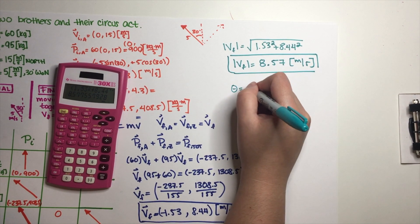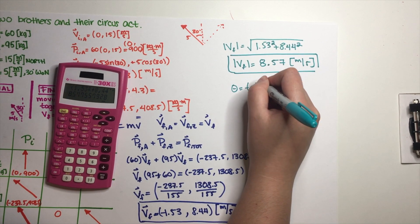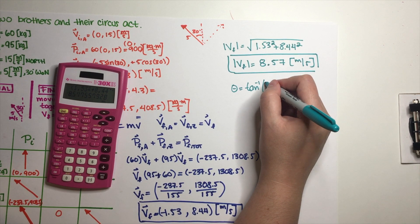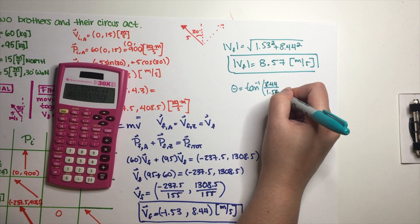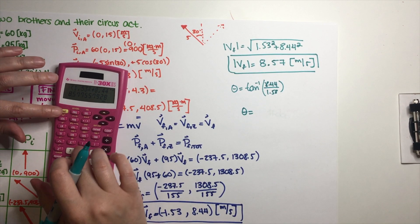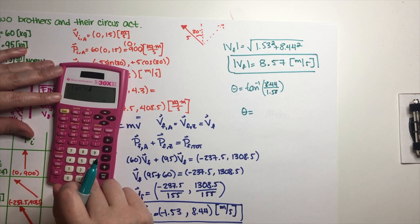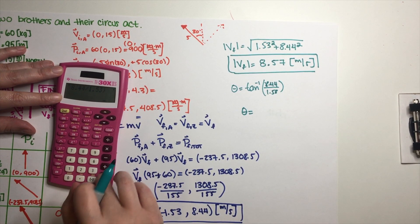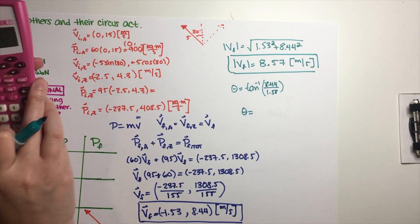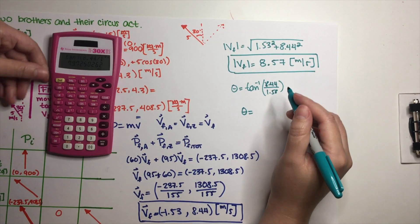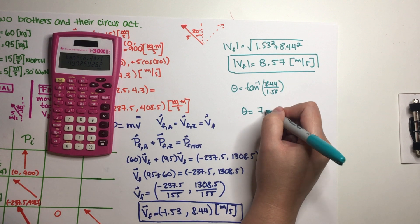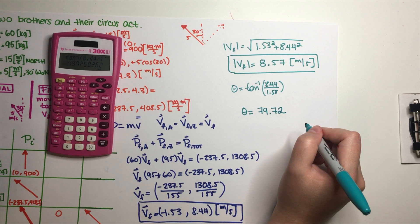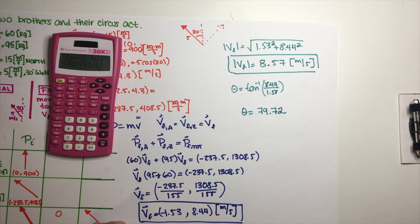For the angle, we use the inverse tangent of the y-component over the x-component: arctan(8.44 ÷ 1.53). That gives us 79.72 degrees.